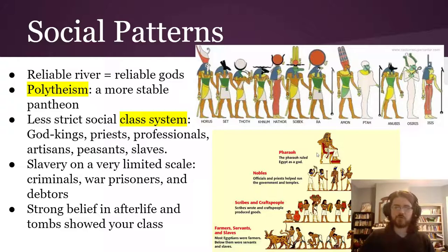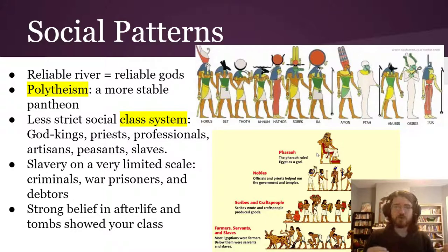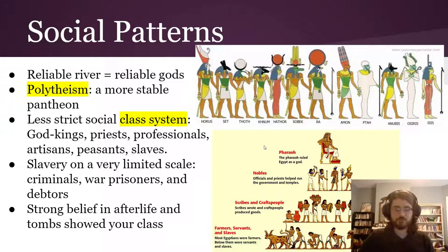Also notable in Egypt is a really strong belief in an afterlife, which you can see in the tombs that people built. Tombs also often reflected the social class of the person, which you can see in a lot of our archaeological evidence. We have archaeological evidence going back a long time both in the record from Egypt itself and from excavations that have been ongoing for a long time.